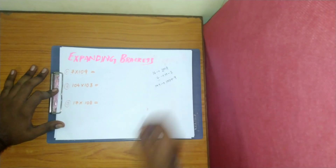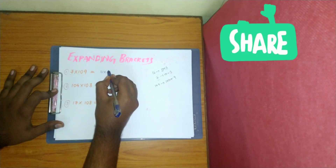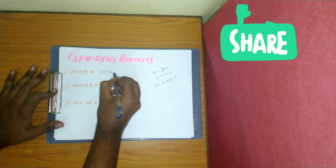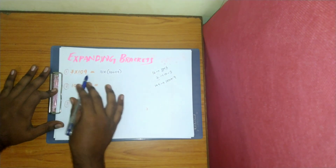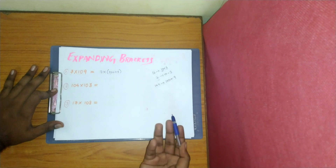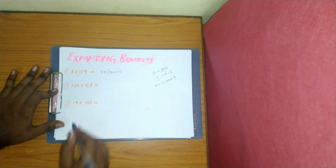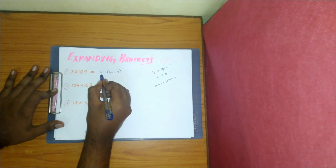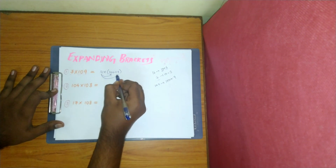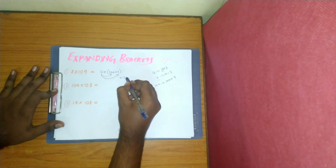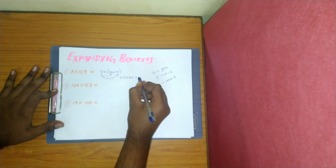So you can write 109 — the nearest hundred is 100, right? So 100 plus 9 you can write. What you have to do is: 7 into — put one bracket — then write 100 plus 9. Basically you are rewriting the number 109 as 100 plus 9. Now to open this bracket: 7 into 100, then plus 7 into 9.